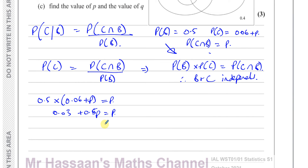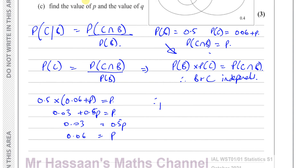We can subtract 0.5P from both sides to get 0.5P equals 0.03. Multiplying both sides by two, P equals 0.06. So therefore P is equal to 0.06.